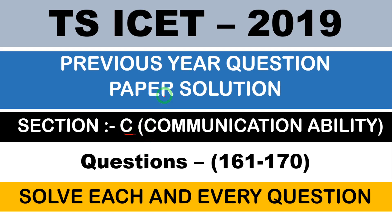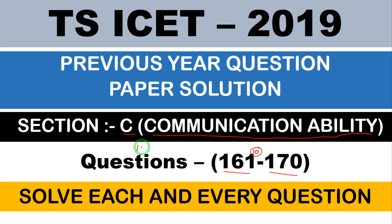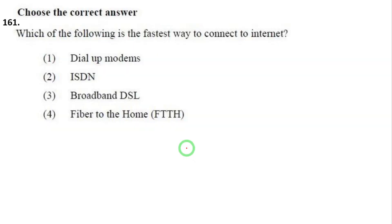I looked at the TS I-SET 2019 previous year papers and saw that Section C covers communication ability. Section C — English and communication ability — covers questions 161 to 170, with 10 questions. There are also 10 questions based on computers and general topics, giving us 10 questions each. Let's solve this video.